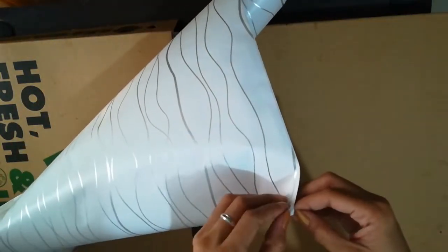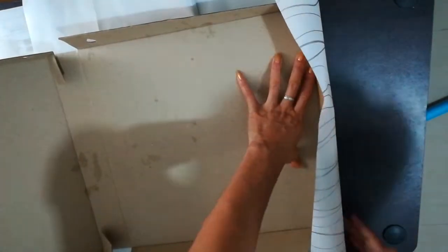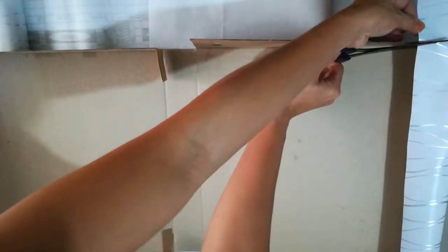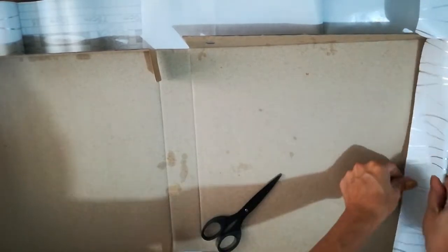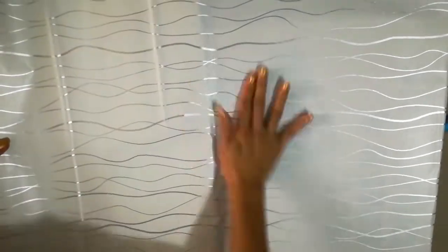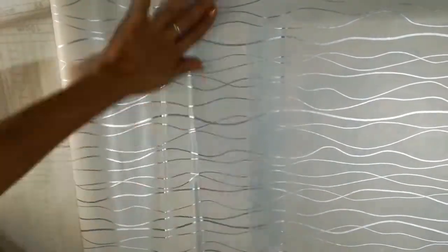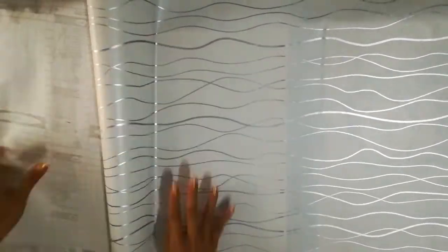Cover your empty pizza box with the wallpaper sticker. Gradually pull the backing of the stickers. Cover the insides of the pizza box as well.